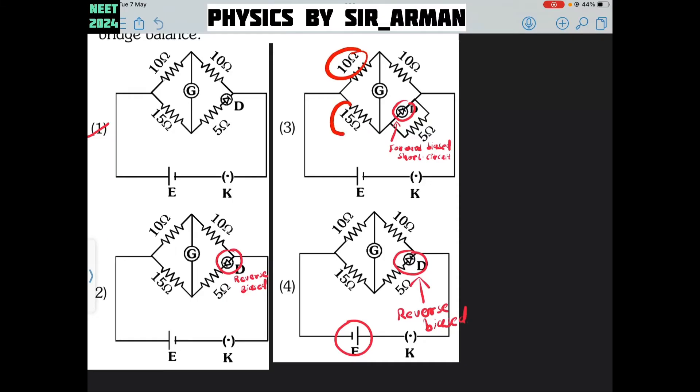For balance with Wheatstone bridge, the ratio of this by this should be equal to the ratio of this by this. For this, it is not possible.